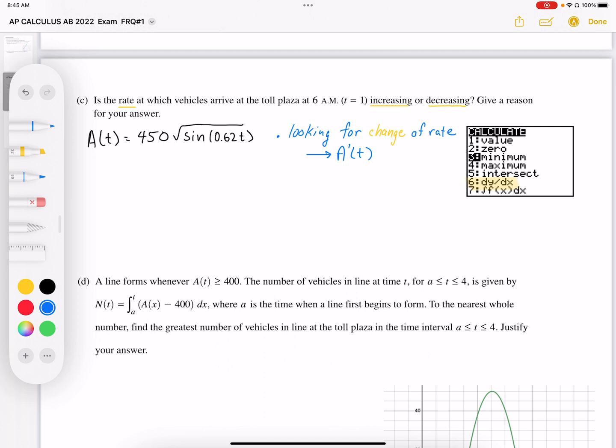And by doing that, we can calculate that A prime, or the slope of A at t equals 1. So A prime of 1 works out to be 343.015.